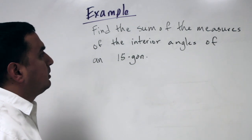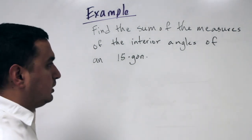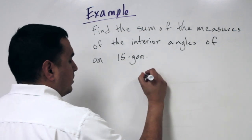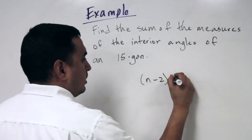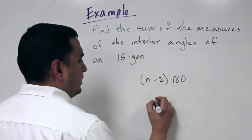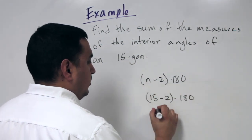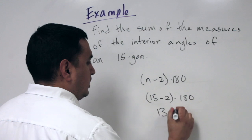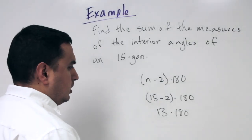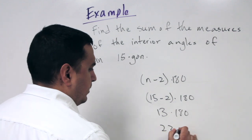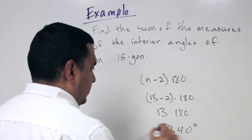Find the sum of the measures of the interior angles of a 15-sided shape. Using (n−2) times 180, we substitute 15: (15−2) times 180 equals 13 times 180, which equals 2340 degrees.